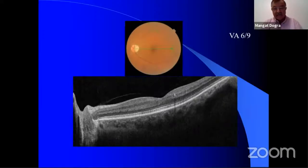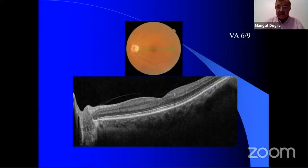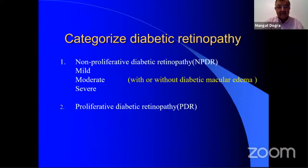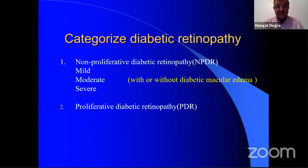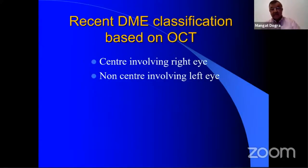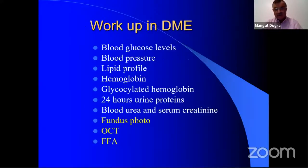The left eye, which he has already described, he categorized it very well. The first thing, whenever a patient of diabetic retinopathy is seen, is to categorize — which he did very well. We must be clear that these days we use these terms: the right eye had center-involving diabetic macular edema, and the left was non-central-involving diabetic macular edema.